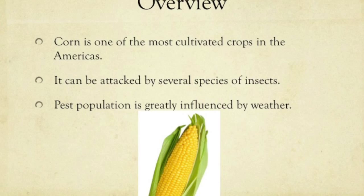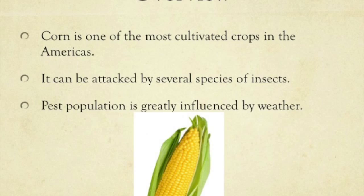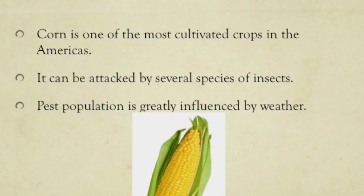Corn, which is also known as maize, is one of the most widely cultivated crops throughout the Americas. Maize can be attacked by a wide range of insects, which we are going to be discussing in detail in this presentation. Insect pest populations are greatly influenced by weather and other natural phenomena, causing variable crop losses from year to year.